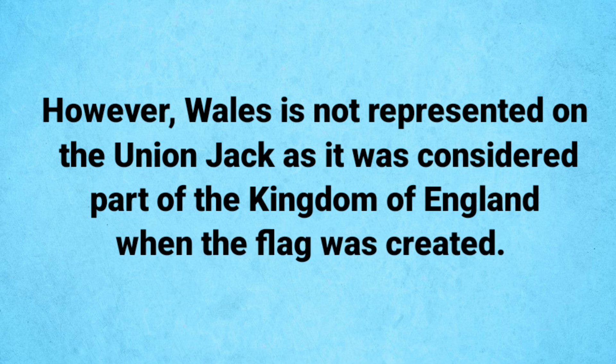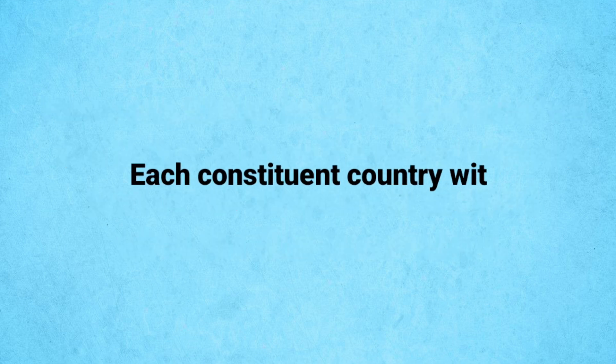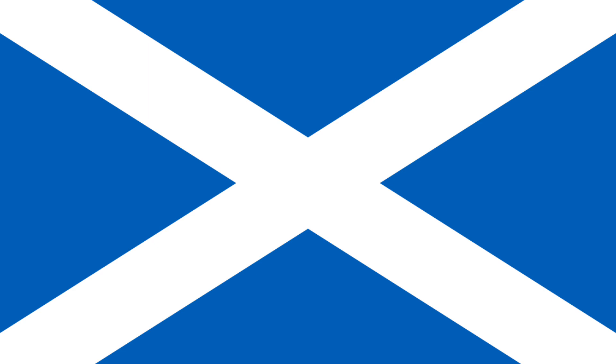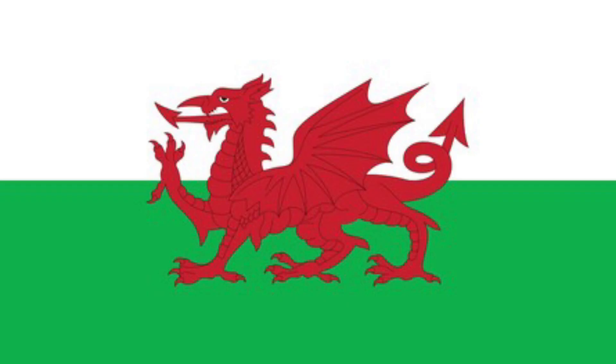However, Wales is not represented on the Union Jack, as it was considered part of the Kingdom of England when the flag was created. Each constituent country within the UK also has its own distinctive national flag: the St. George's Cross for England, the St. Andrew's Cross for Scotland, and the Red Dragon for Wales.